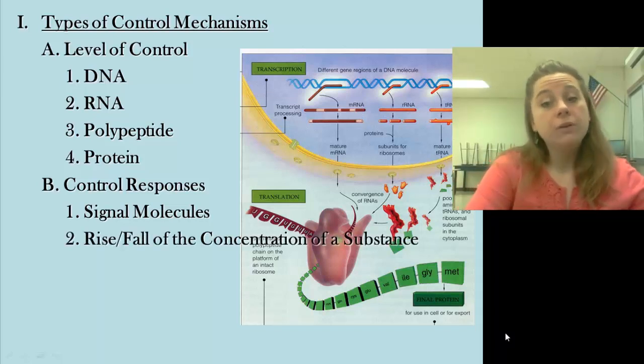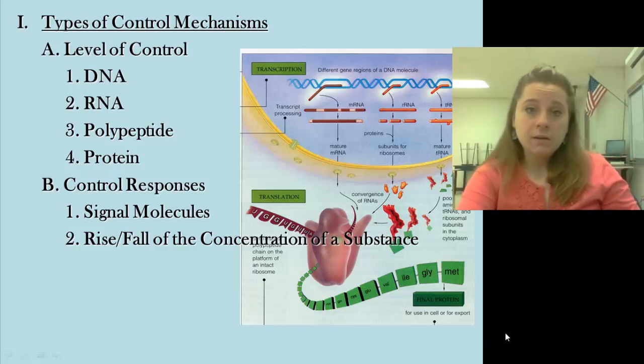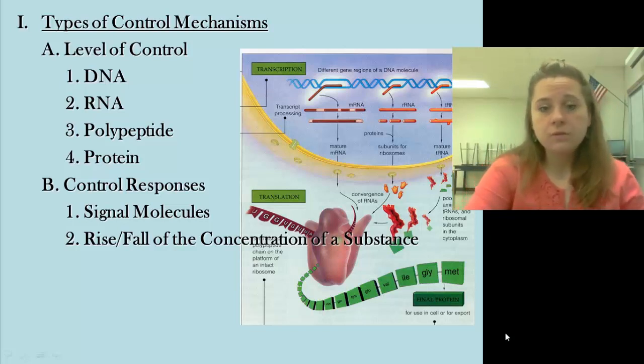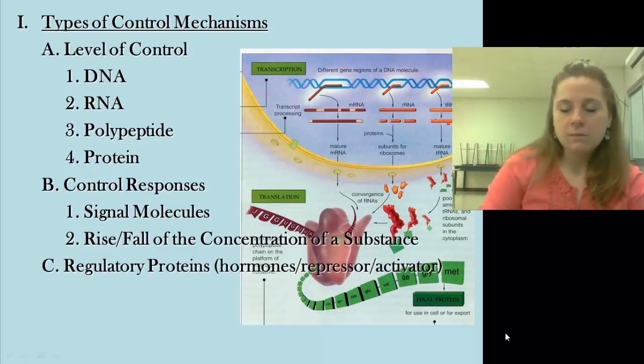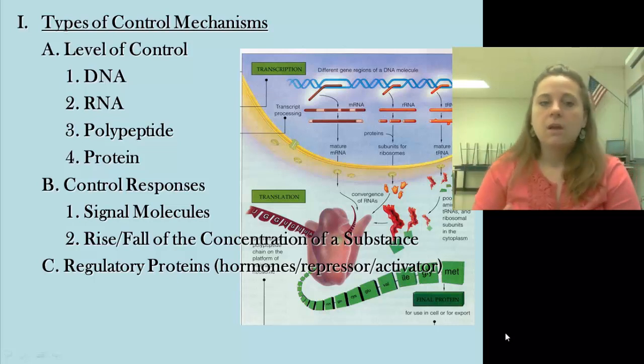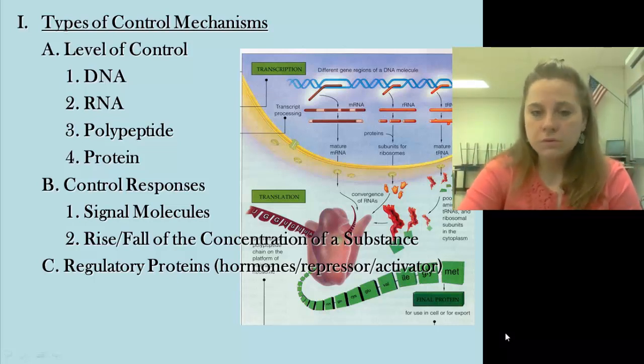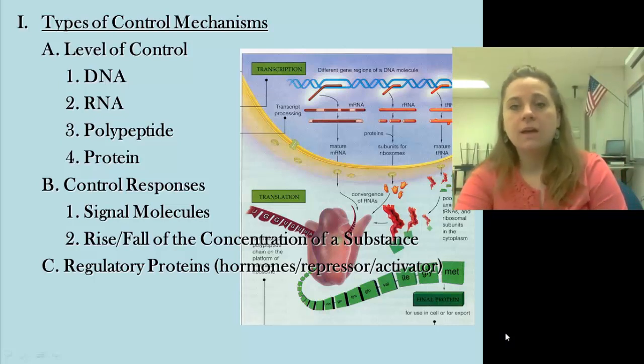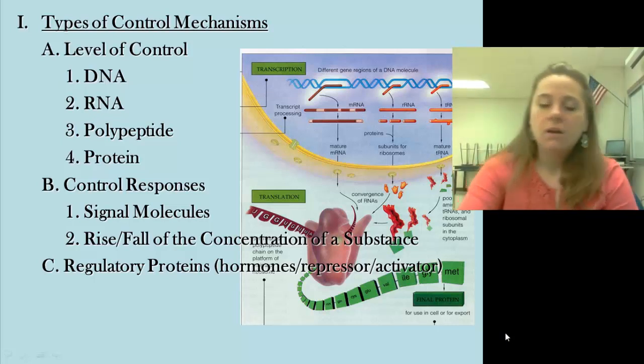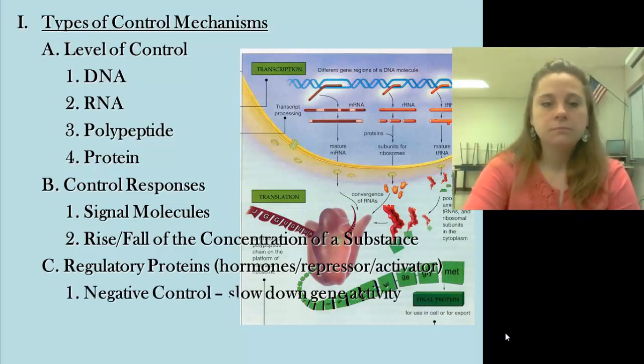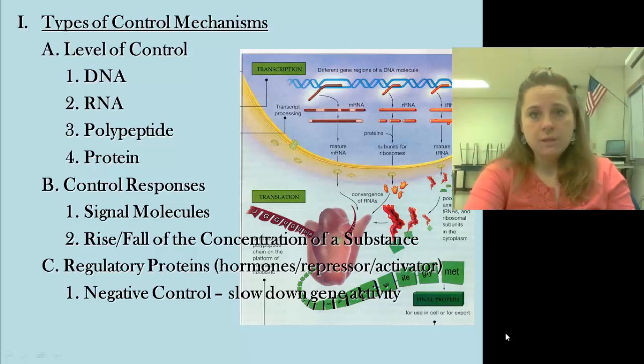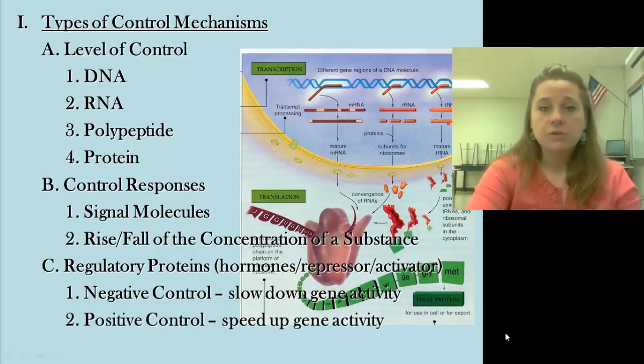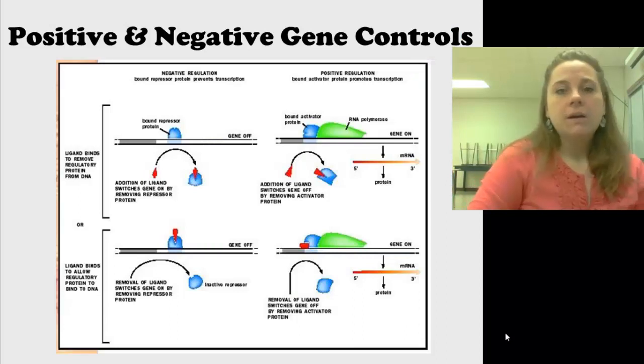How much or how little of a substance is present can affect how a gene is turned on or off. So concentrations can actually affect that. We also have types of regulatory proteins that play a role. There are repressor and activator proteins that prevent or increase the use of a gene. So in some of those regulatory proteins, what we have is either negative control, so we're going to shut down gene activity, turn it off, slow it down. We can get positive control, which is going to actually increase or speed up the activity of a gene.